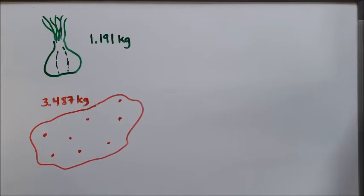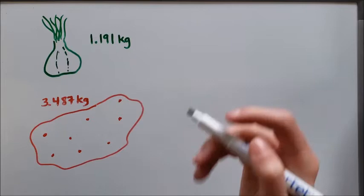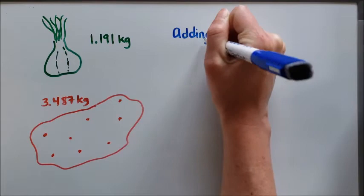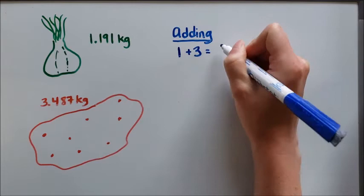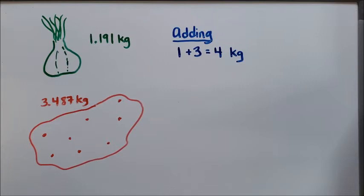We do this by estimating and we've talked about estimating this year. We are going to focus on front end estimation when we are doing this. If I am adding, one of the best ways that I can do this is by looking at these first numbers and adding them together. So I'm going to take 1 plus 3 and that's going to give me 4. I can guess that the total mass of these two items is going to be around that 4 kilogram mark.